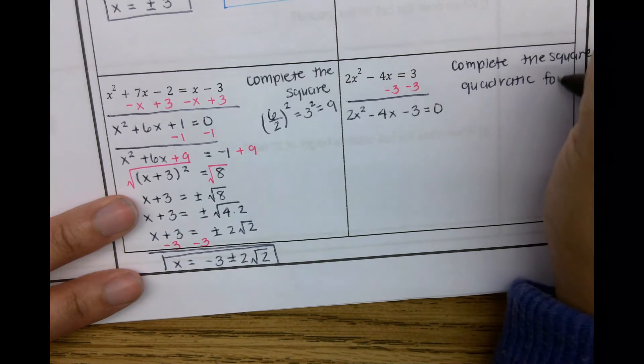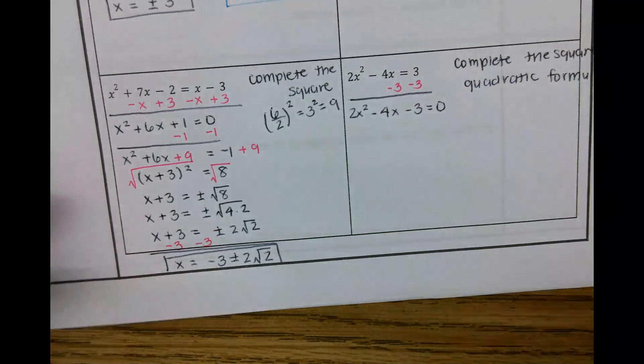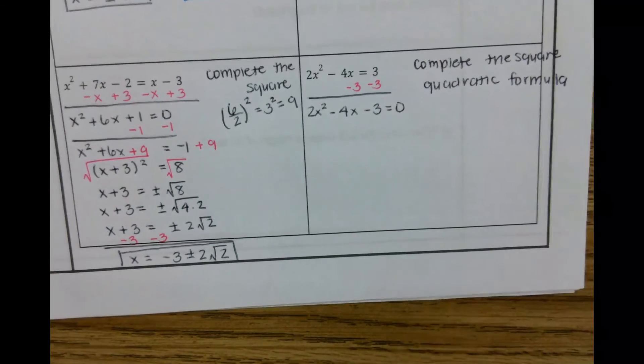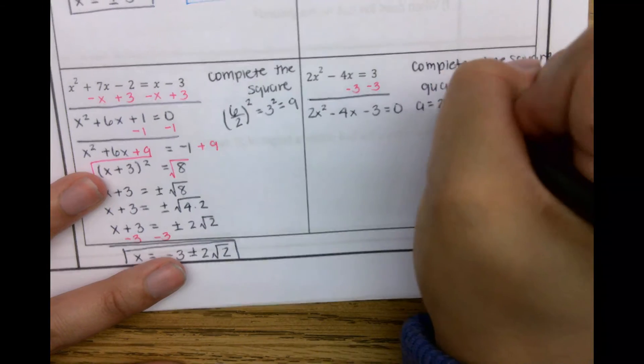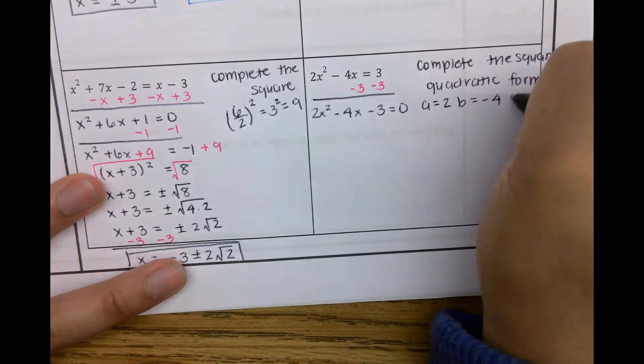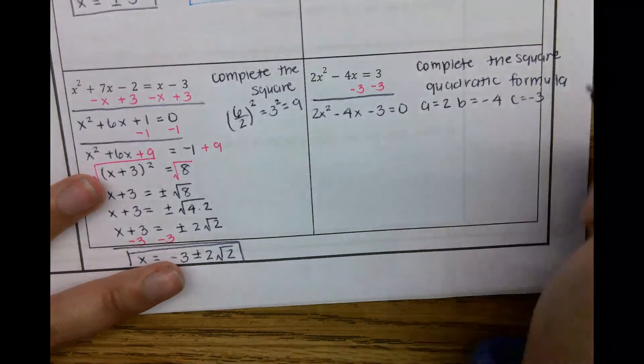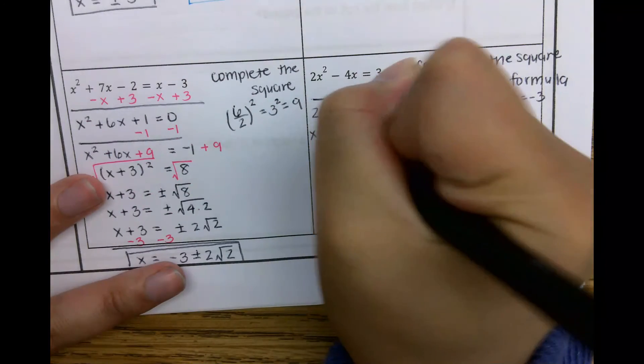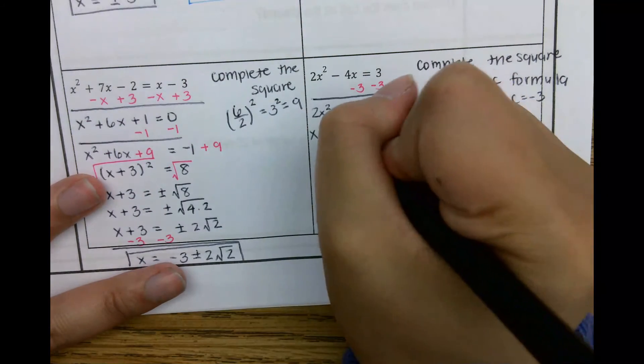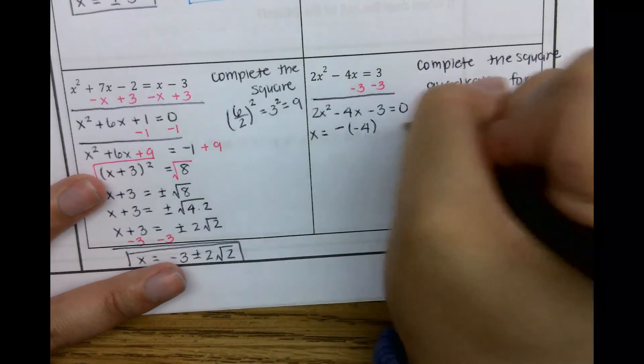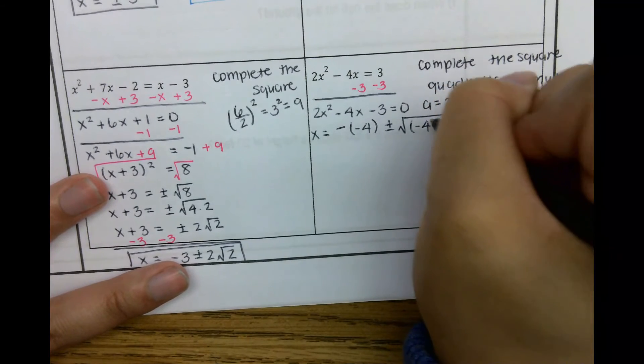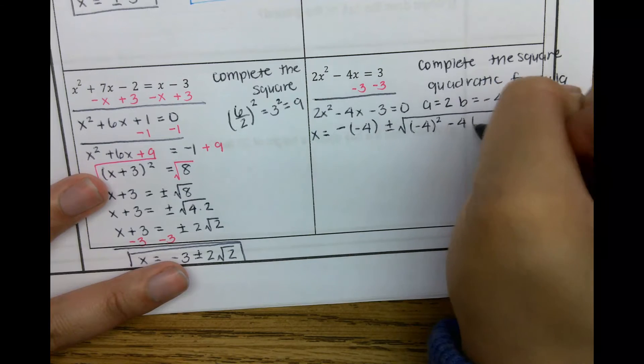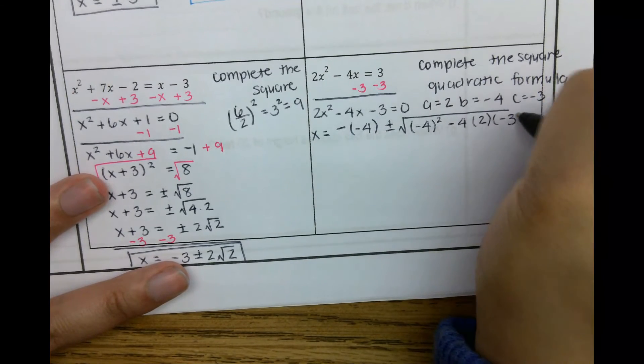And then I'm also going to do it with completing the square. And then up to you which one you think is faster. So here, a equals 2. B equals negative 4. C equals negative 3. So let's plug it in. So x equals negative b. So negative negative 4 plus or minus square root b squared. Negative 4 squared minus 4 times a, which is 2, times c, which is negative 3. All over 2 times a.